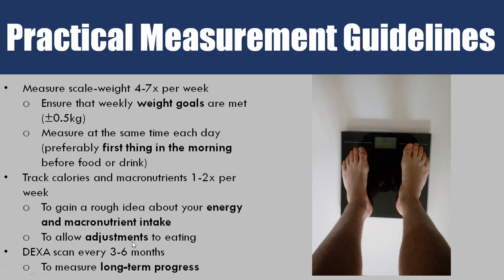From there, allow adjustments to your eating. If the scale weight shows you're not meeting your weekly weight goals — not losing enough — start reducing calories. If you're losing too much weight, eat more. Tracking once or twice a week gives a rough idea and lets you adjust from there. Finally, to get a precise measurement on body composition and confirm you're losing fat rather than muscle, get a DEXA scan every three to six months to measure your long-term progress.